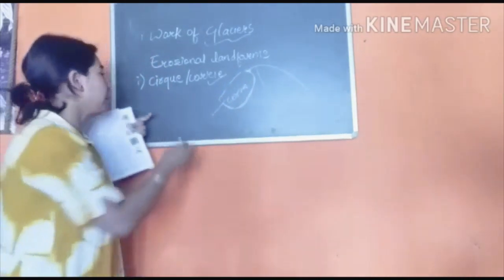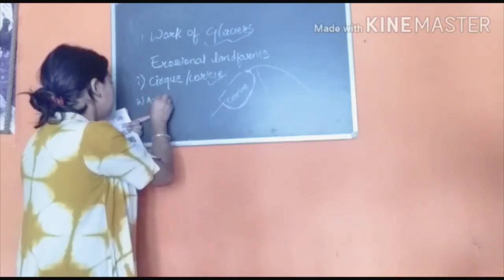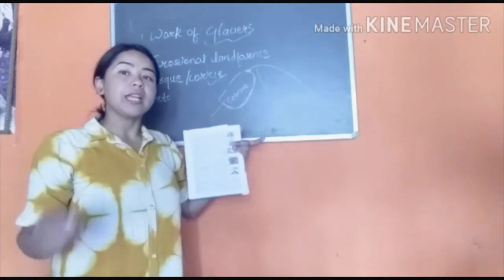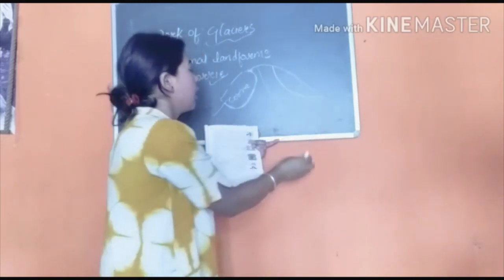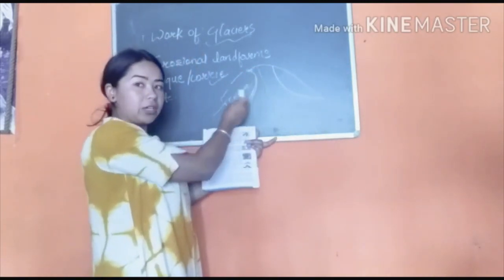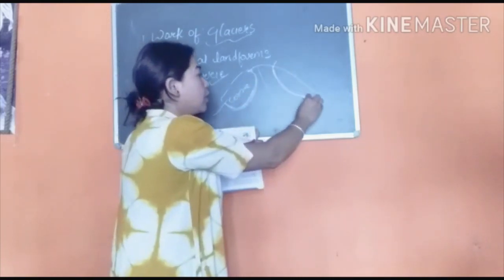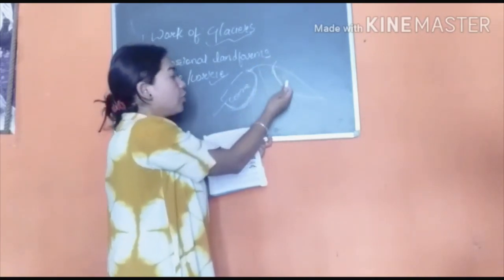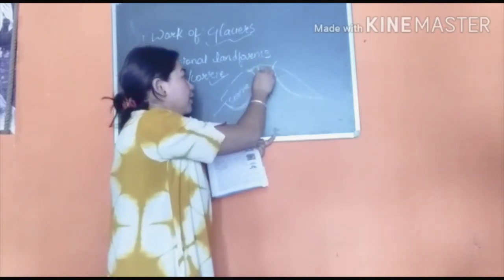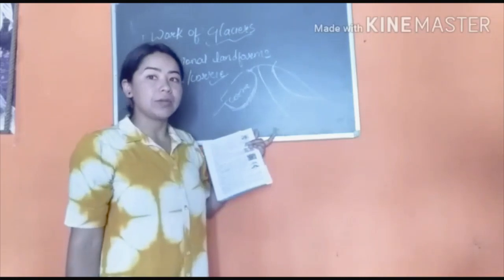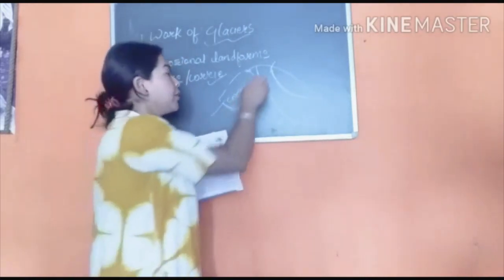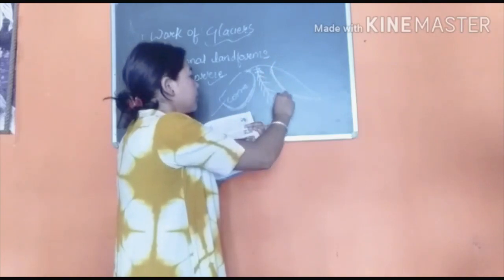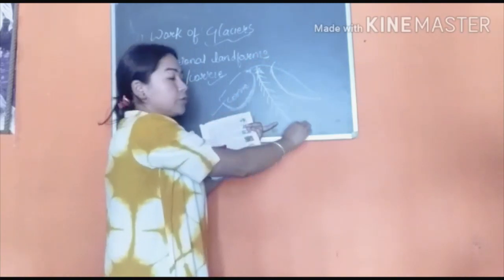Next, after the cirque, we have the arête. When a cirque develops on the adjacent side of a mountain slope — suppose this is one cirque with back-cutting, and another cirque also develops along the adjacent slope with back-cutting — the middle portion which acts as a boundary between these two cirques is left very high, rigid, and very sharp. This sharp boundary feature is known as an arête.